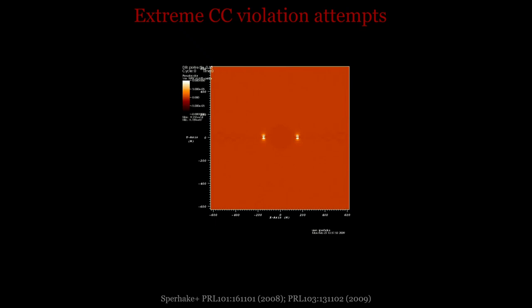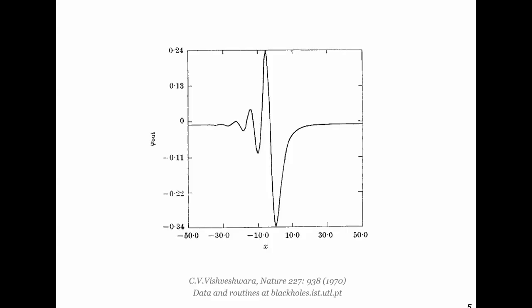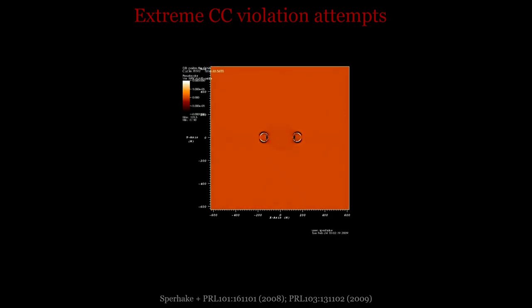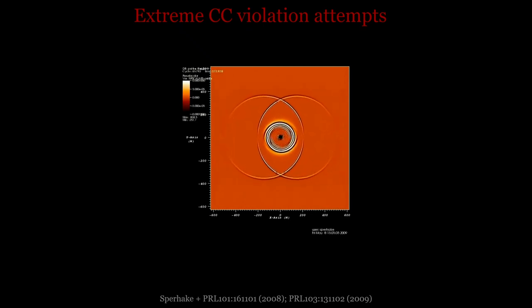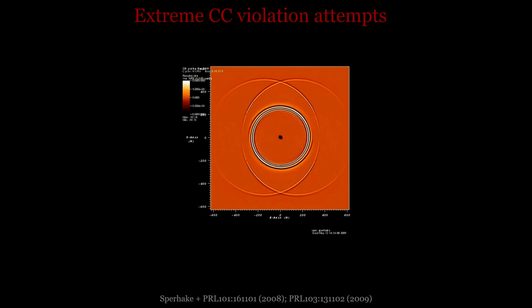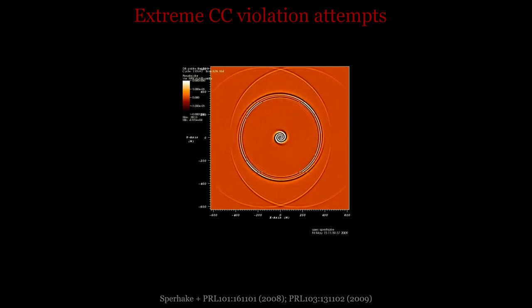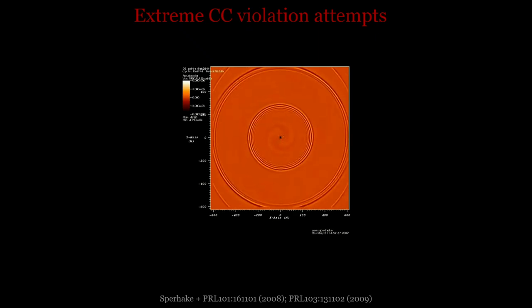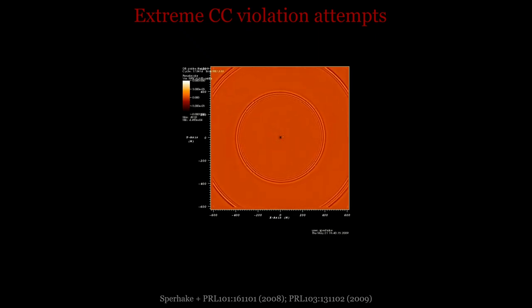The field equations know about this attempt to violate the bound. The guys don't merge — they see there's just too much angular momentum, so they zoom out. They give a couple of orbits, emit the excess angular momentum in gravitational radiation, and then it's safe to merge. So here it is: too much angular momentum, they go around each other a couple of times, zoom out, release the excess angular momentum, now they merge. Everything is fine — the final object is a black hole spinning at 96% the Kerr bound.